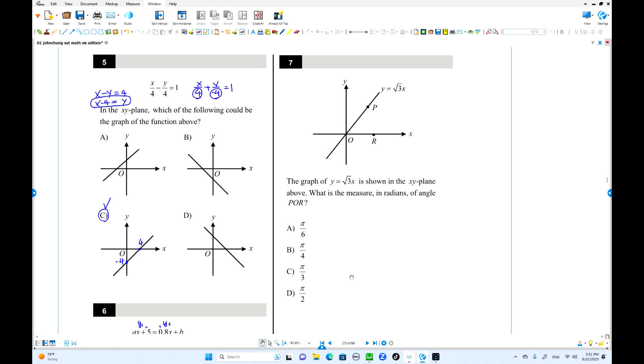This is number 7. y equals square root x. What is the measure in radians of the angle PQR? This is the slope as well. Square root 3 over 1. That's the slope. This is square root 3. This is 1. You can use these numbers. This is right angles. So this is going to be 2. 2, 1, square root 3. That's the special right triangle. 2, 1. That is 60 degree, which equals pi over 3. That's the angle of PQR. Pi over 3 is the answer.